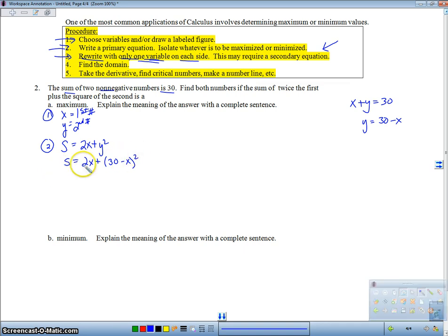All right, then I think an easier way to do this is to let's go ahead and multiply this guy out. So I'm just going to go ahead and distribute this thing out here, and I'm going to get 2x plus 900 minus 60x plus x squared. Okay, so then I'm going to add those like terms there. I'm going to get x squared minus 58x plus 900.